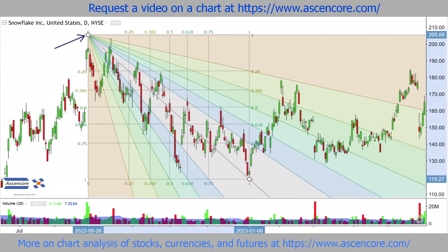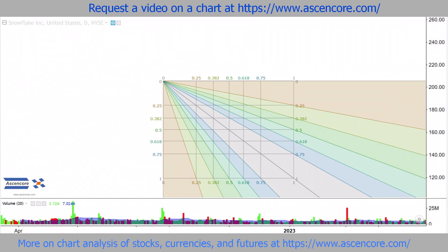The starting or origin point is on the left side, while the end point is on the right side. Since this is a downtrend, the fan will extend from the top left to the bottom right.